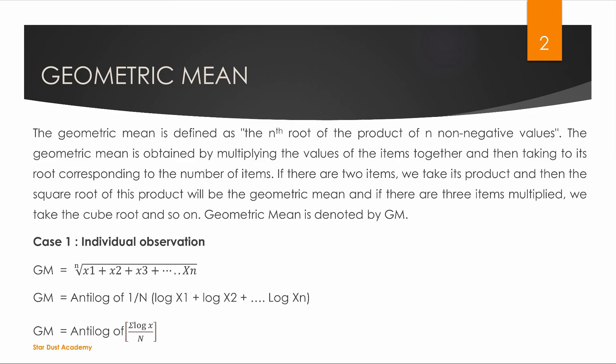When we add log x1, x2, and so on, we add their logarithms, then divide by n. This gives us the answer in the form of a logarithm. If you want to get the actual value of the geometric mean, it will be the antilog.